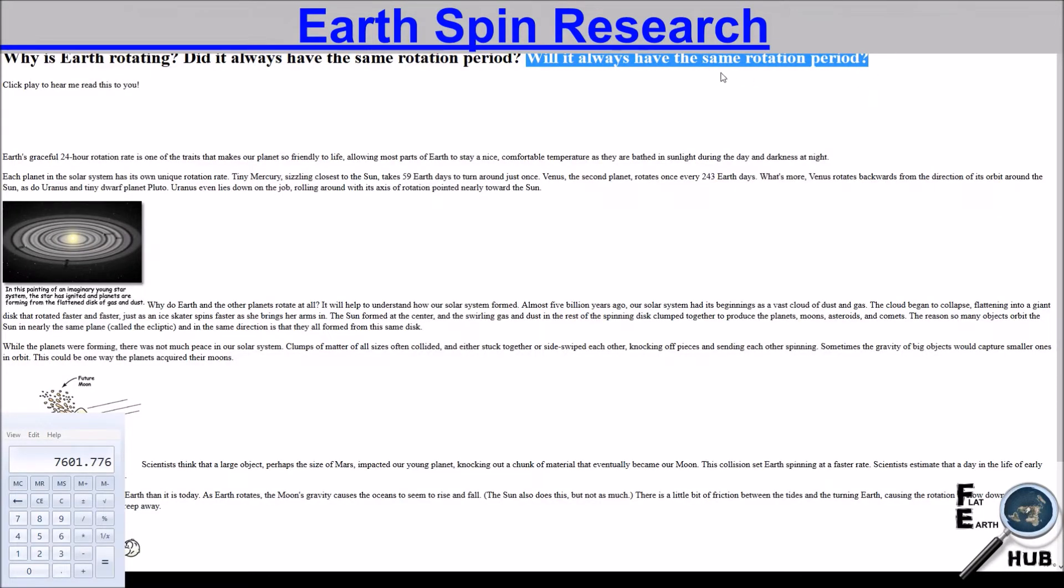Look down on the earth from above, and you'll see that it's turning in a counter-clockwise direction. Will it always have the same rotation period? Same with the Sun, Mars, and most of the planets.